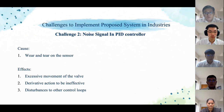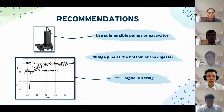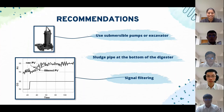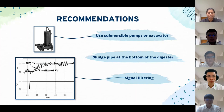Now let's move on to recommendations. The major challenges in treating POME using ponding systems are scum formation and solid sludge accumulation, as well as noise signals in the PID controller. There are three eco-friendly recommendations. The first is to remove scum and sludge using submersible pumps or excavators, then de-water and dry them to be used as fertilizer or for other land applications. The second is to install a sludge pipe at the bottom of the digester to remove accumulated solids. The third is the implementation of signal filtering. Typical industrial PID controllers include a filter on the derivative term expressed as a fraction of the derivative time, usually in the range of 0.1 to 0.2. Based on the graph shown in the slide, a filter is able to receive a noisy signal and yield a signal with reduced random variation, while retaining more of the true dynamic information of the original signal.